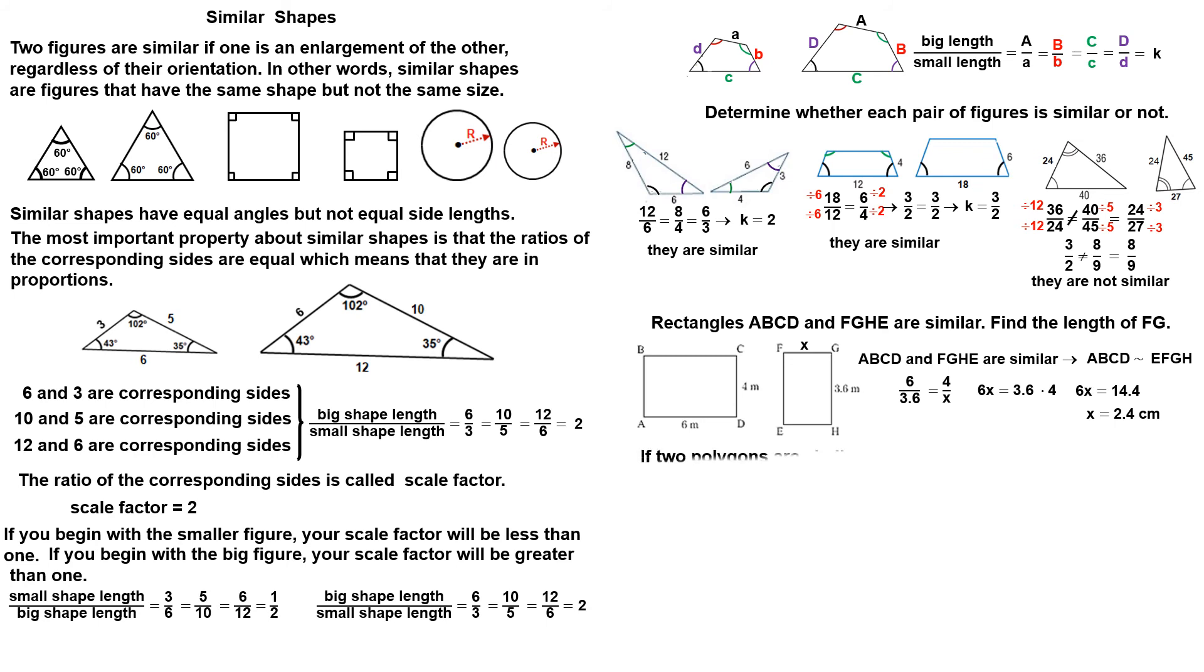If two polygons are similar, not only their corresponding sides are in proportion, but all length measurements as altitudes, diagonals and perimeters are all in the same ratio. Let's see how it works.